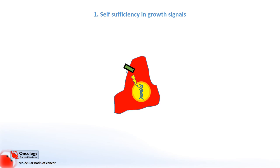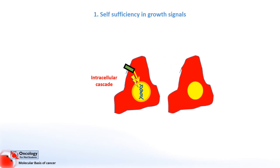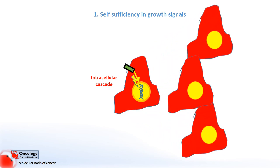The damage that occurs to these genes in cancerous cells is quite specific. The mutation changes the DNA so it now produces a recipe for a similar receptor, but one that can activate itself without the need for a growth hormone. This activates the intracellular cascade and causes the cell to divide when it shouldn't be. This results in uncontrolled growth.